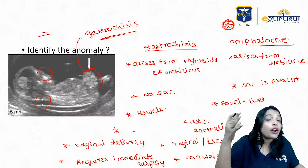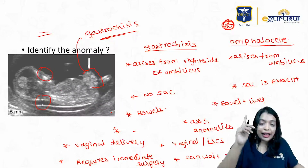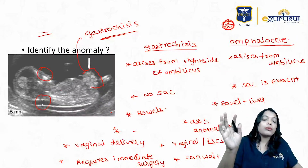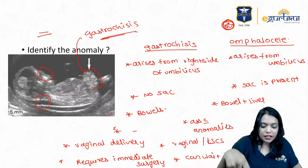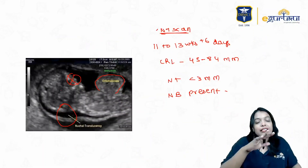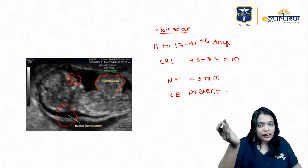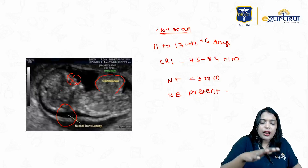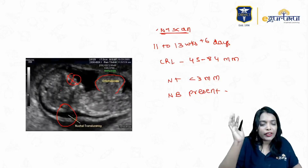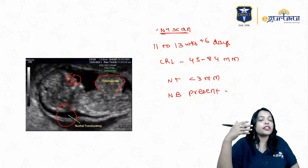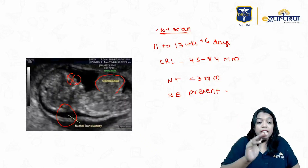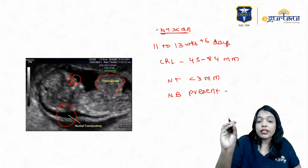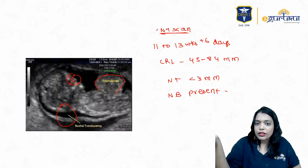When you have a midline defect that is irregular and not covered by a sac, it is gastroschisis — prognosis depends on how much bowel is damaged. In omphalocele, there is a sac covering, so the prognosis is usually not very bad. Surgery can be done after delivery and does not require immediate intervention, but along with bowels, liver can also come out. Omphalocele can also be associated with other malformations.